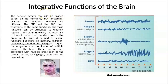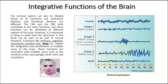The next topic is the integrative functions of the brain, which include cognition, memory, emotions, and sleep. Sleep cannot be easily studied because we are sleeping, so we use an electroencephalogram. Electrodes on the scalp capture electrical activity in waves. You can see different waves when awake, then when becoming drowsy, then in deep sleep, and then in REM — rapid eye movement.